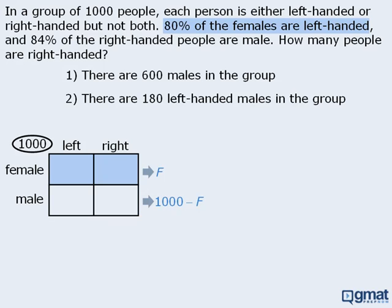There are f females altogether, and 80% of them are left-handed. So the number of females in the left-handed box will be 80% of f, which we can write as 0.8 times f. If 80% of the females are left-handed, the remaining 20% must be right-handed, so the number of right-handed females will be 0.2 times f.